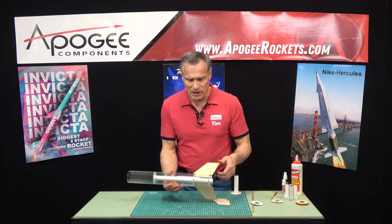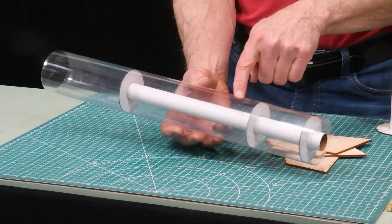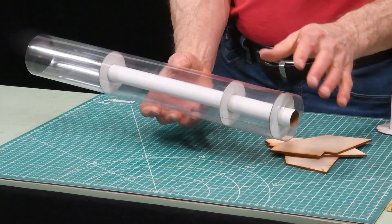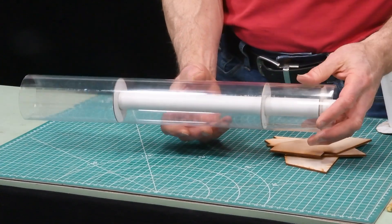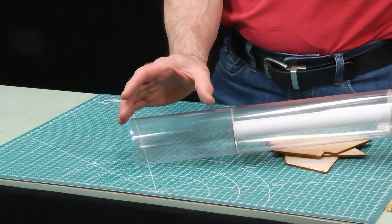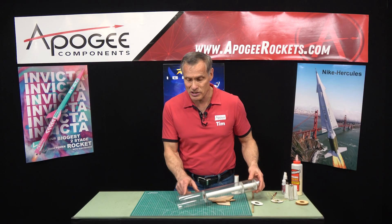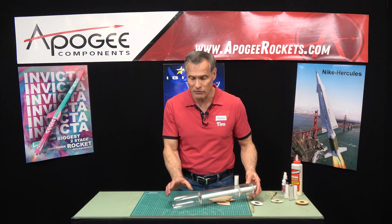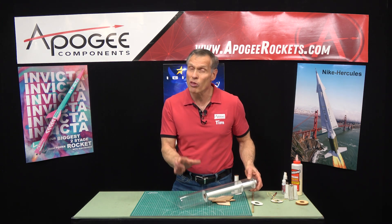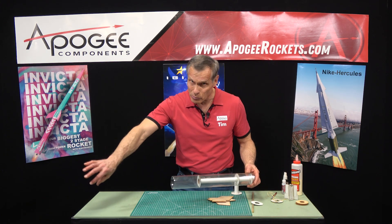So when you're designing a motor mount tube like this if this tube is really long it's called a stuffer tube and the purpose of the stuffer tube is to decrease the volume that the ejection charge has to pressurize to push the nose cone off. So the smaller the volume the more pressure the harder it's going to push it off.